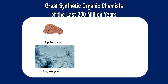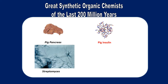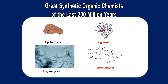But this ability to create useful organic molecules isn't limited to plants. Consider higher-order animals like pigs, whose pancreas until just a few decades ago was the source of insulin used to treat human diabetics. Or Streptomyces, the source of one of the most powerful antibiotics ever discovered, streptomycin.